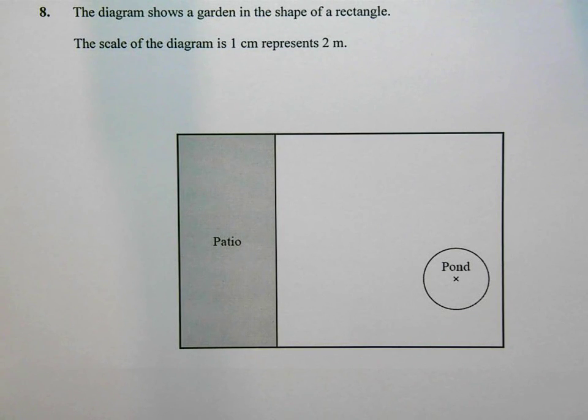This is question number 8 in the June 2014 non-calculator paper. Reading through this question, it says the diagram shows a garden in the shape of a rectangle.